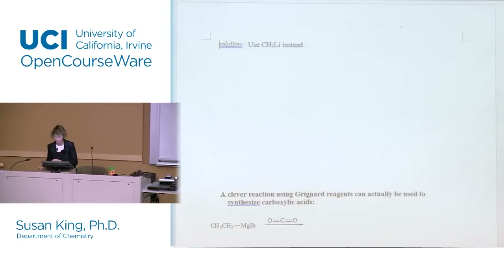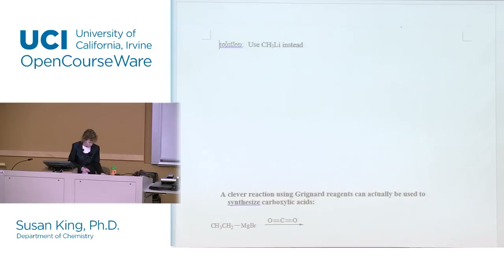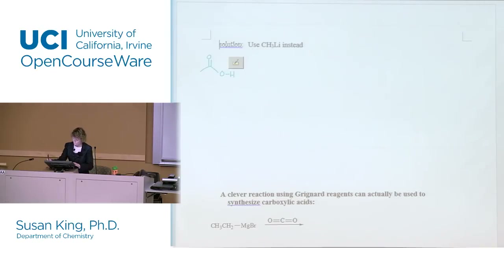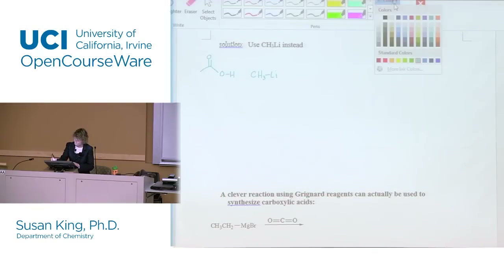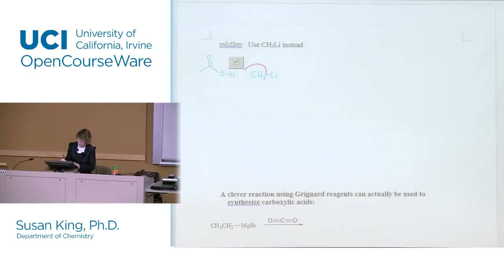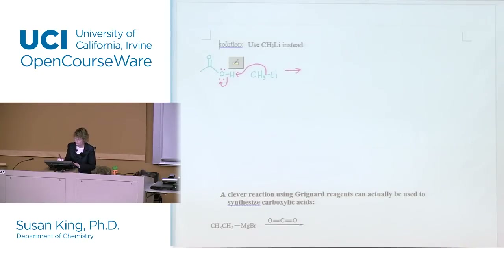But we said lithium will, so this is what it looks like when you use lithium instead. Same first step as a Grignard — we're going to deprotonate the carboxylic acid. We grab the acidic hydrogen and push electrons up onto oxygen to give us a carboxylate. Grignards are not strong enough to add to a carboxylate, but lithium reagents are stronger nucleophiles and they are strong enough to add to a carboxylate.